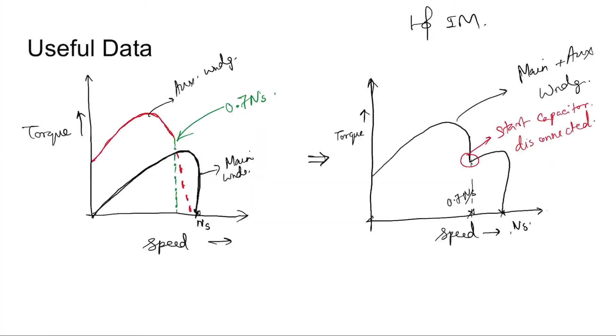Useful data you need is that with the auxiliary winding, the torque speed characteristics become somewhat like this, as shown in the red color.